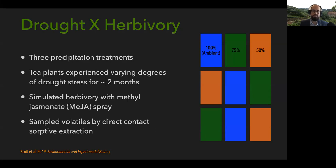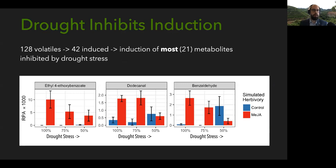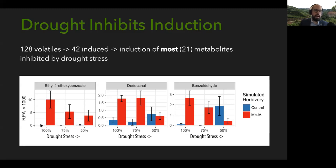We sampled volatiles from these plants again by direct contact absorptive extraction. Out of 128 volatiles detected, 42 were related to the methyl jasmonate spray. For most of those metabolites, their induction was inhibited by drought stress. For example, ethyl-4-ethoxybenzoate is really not produced at all in the control plants — it's only in plants with the methyl jasmonate treatment — but the strength of that induction goes down with increasing drought stress. That was the pattern for the majority of the induced metabolites.